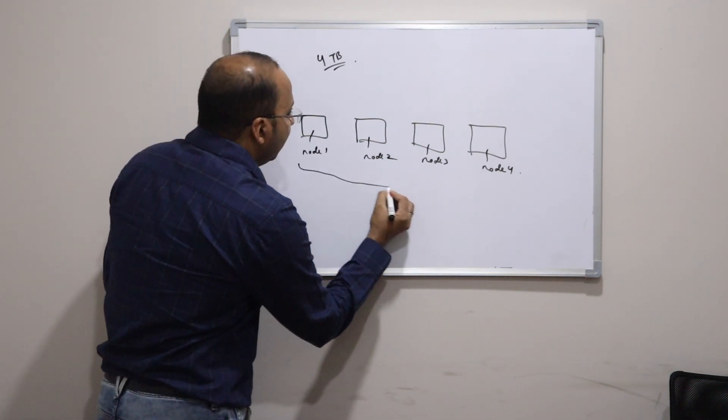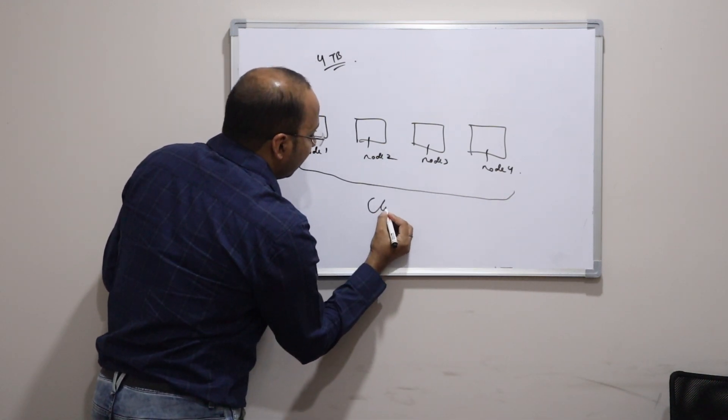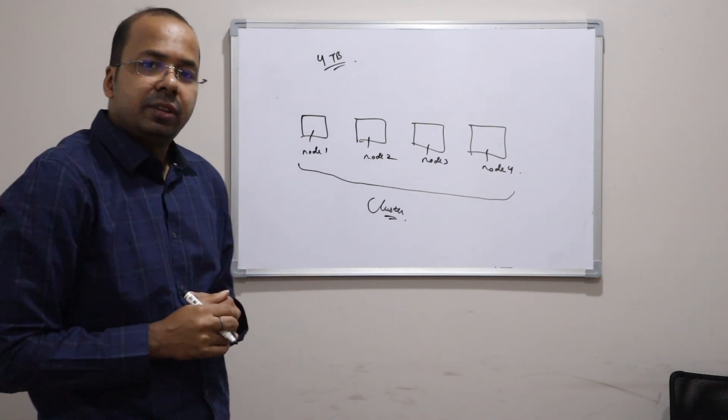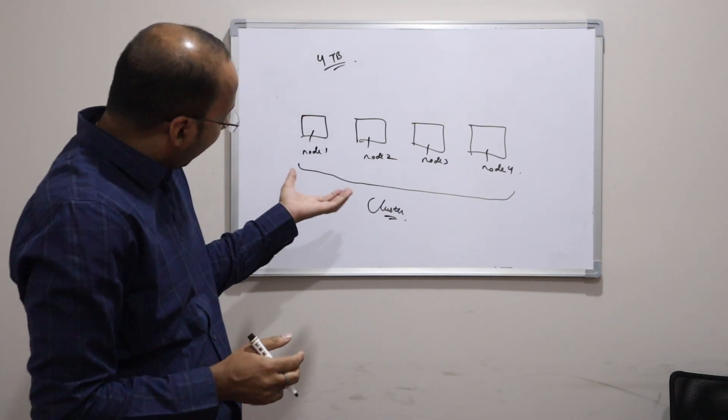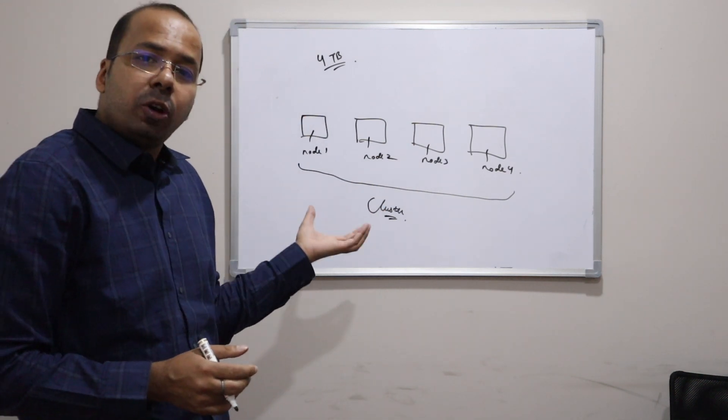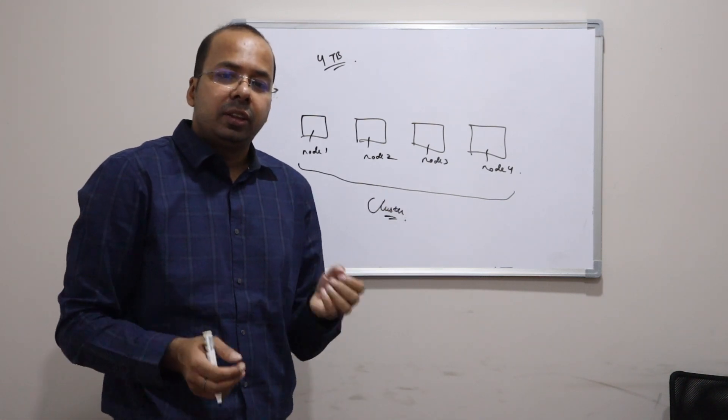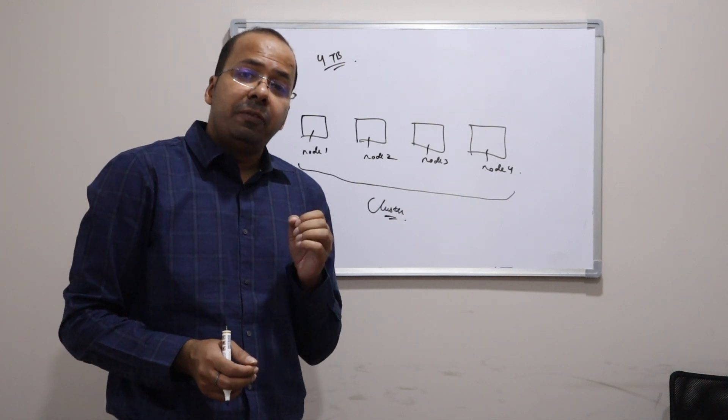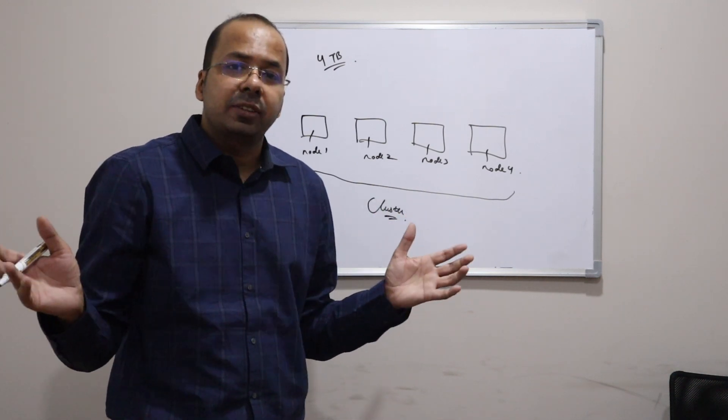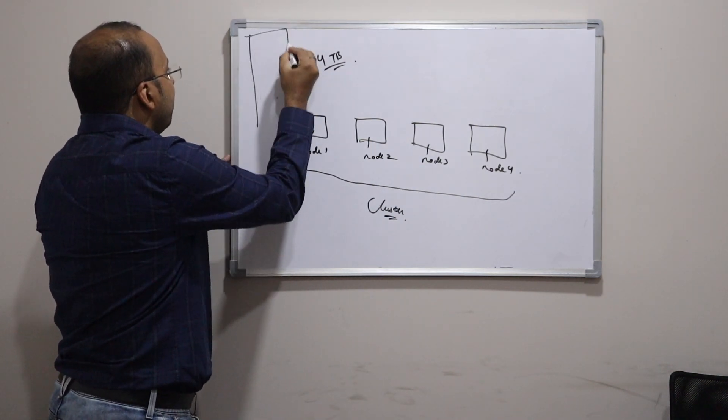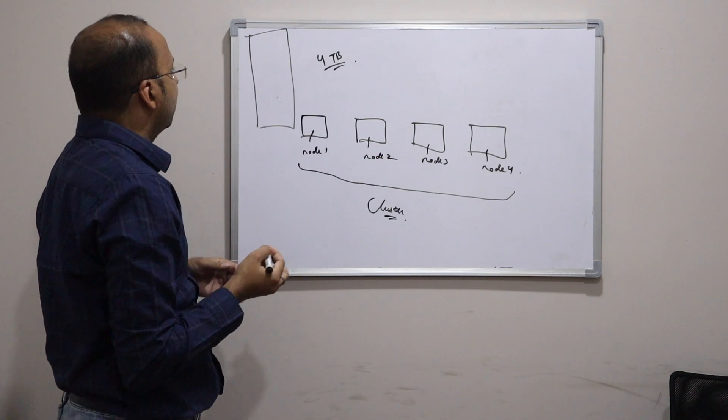Now together all of this is called as a cluster. And in this case what I have drawn here is a 4 node cluster. We can have a 1000 node cluster also. There are some e-commerce companies which uses pretty big clusters. So now what I will do is,